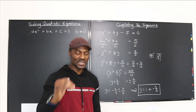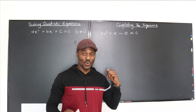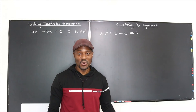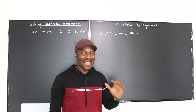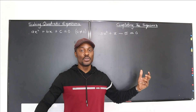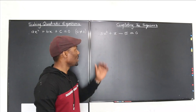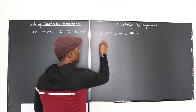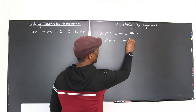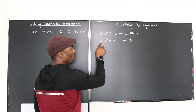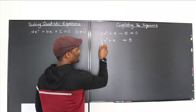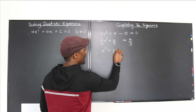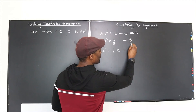One more example and we're done with completing the square. This question is one you'll need completing the square for, or the quadratic formula, because you cannot factor it. Follow the same process: 3x squared plus x equals 5. Divide through by 3 to get x squared plus 1 over 3x equals 5 over 3.